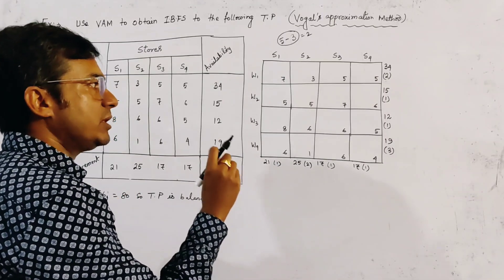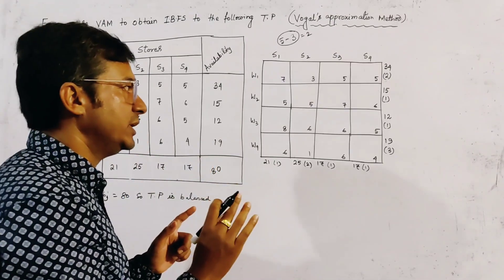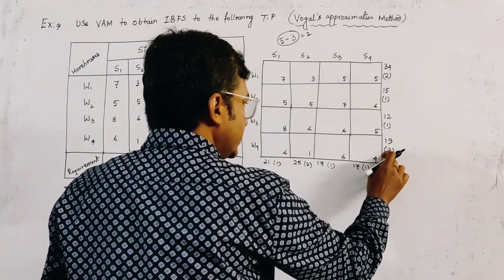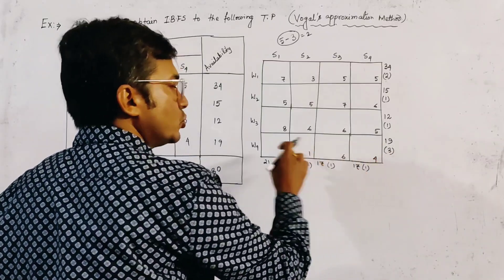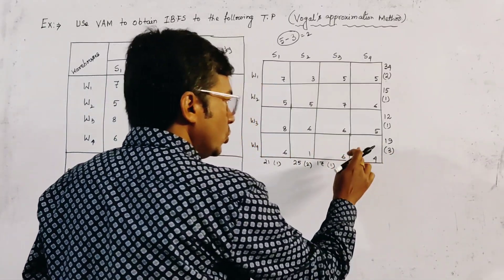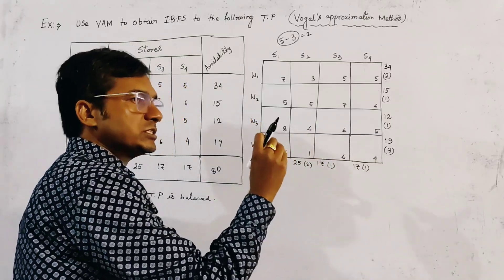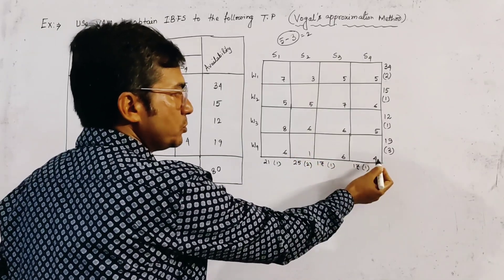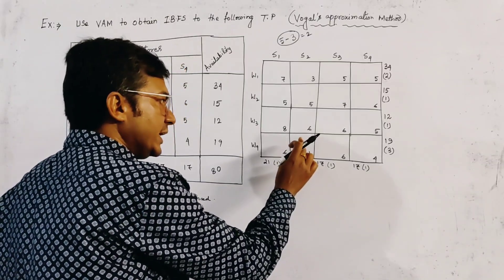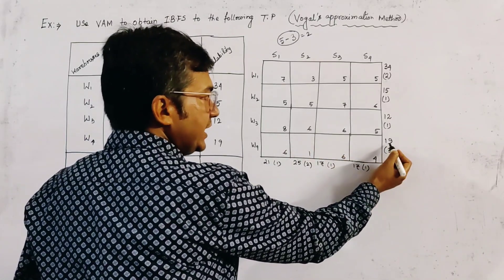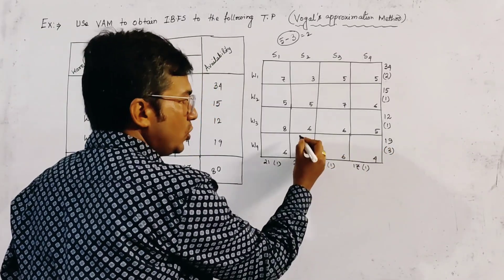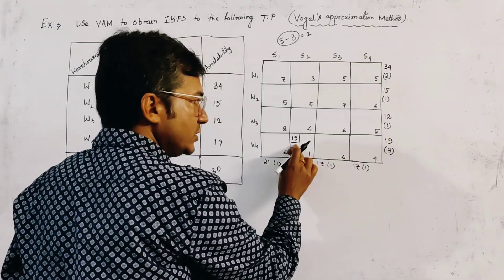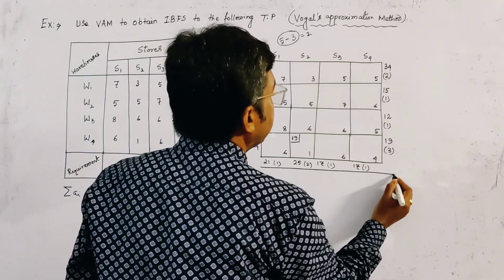Now we find the maximum penalty row or column. It is clear that the fourth row contains the maximum penalty, which is 3. This indicates we have to allocate first in the fourth row. To allocate in the fourth row, we find the minimum cost cell, which is clearly the cell with cost 1 — other costs are 4, 6, 6. So we allocate in this cell first. Availability is 19 and requirement is 25, so we allocate 19 units, the minimum of the two.